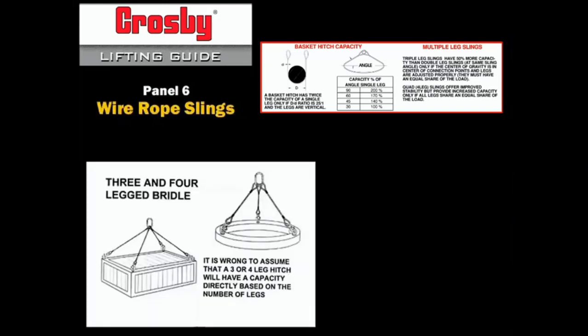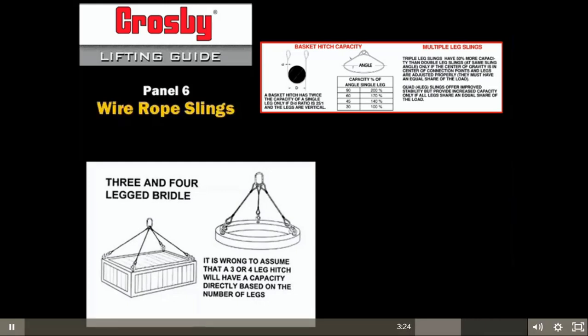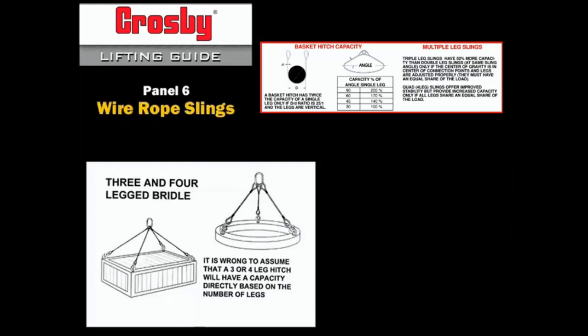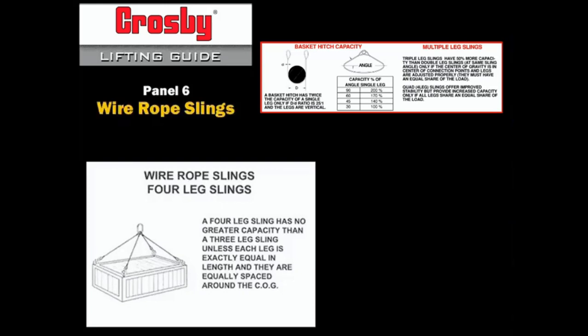Multiple leg slings of three and four legs always improve load control and stability. Their capacity, however, is not always greater than a two leg sling. Three leg slings will have a 50% increase in capacity as compared to a two leg assembly only if the center of gravity is properly placed between all three legs of the sling. A four leg sling usually does not have a capacity greater than three legs. In some cases, the capacity may be based on two legs.